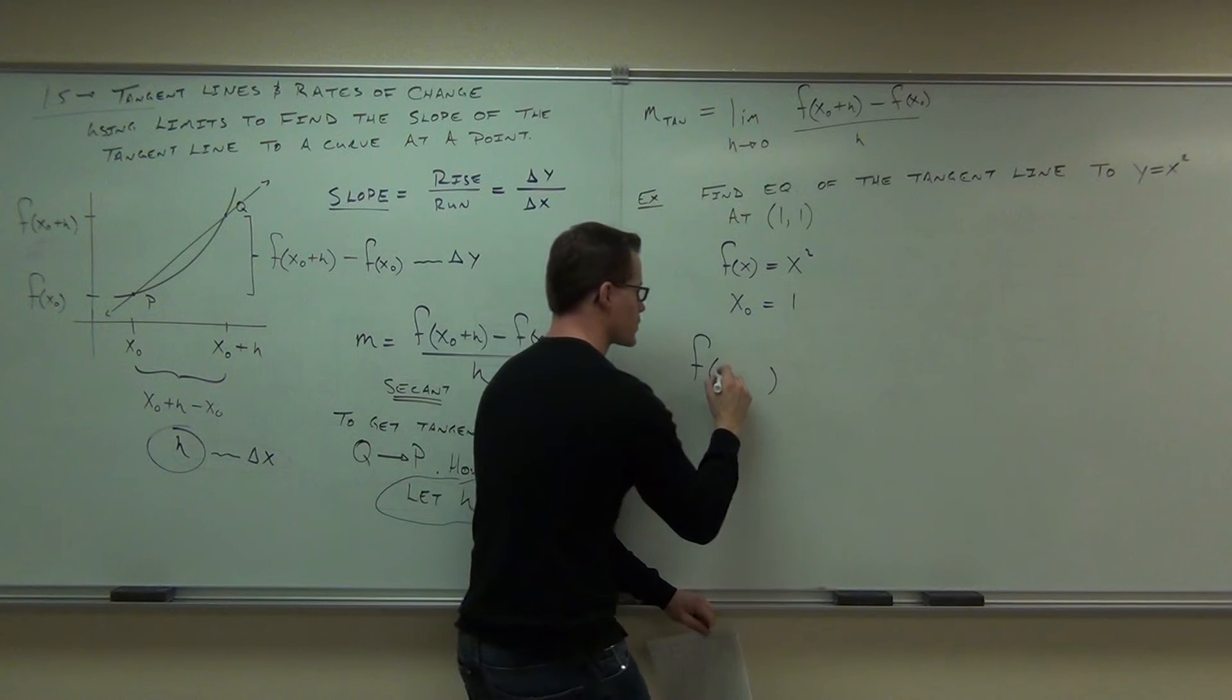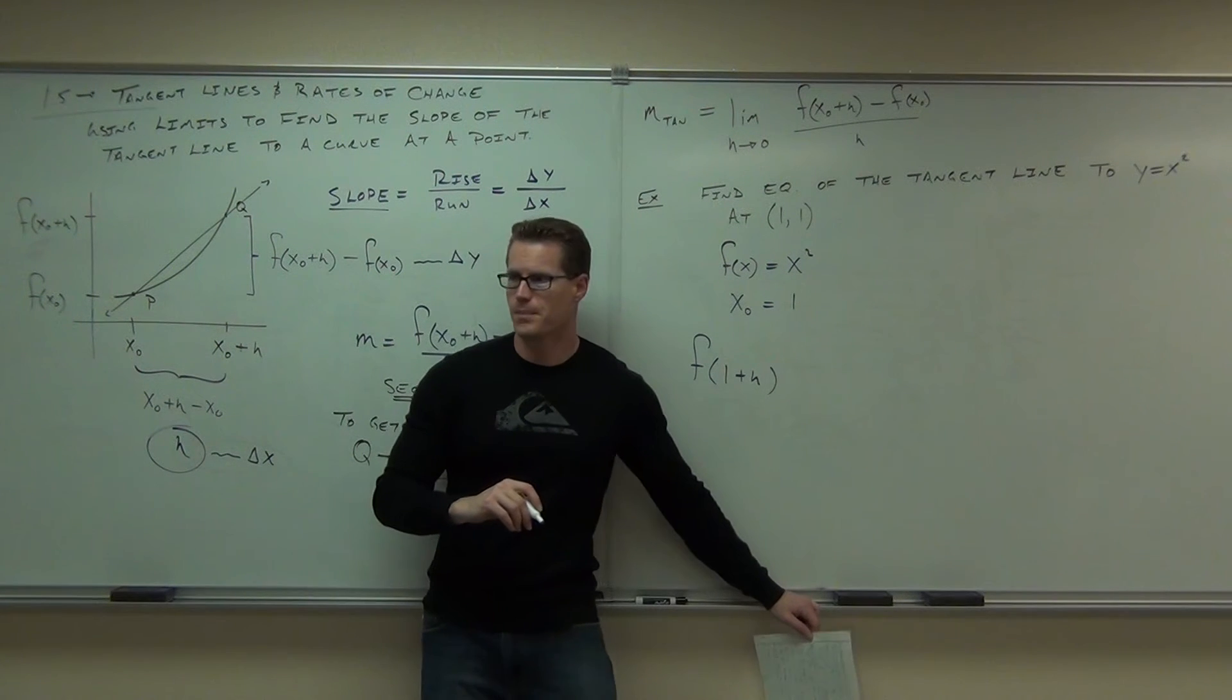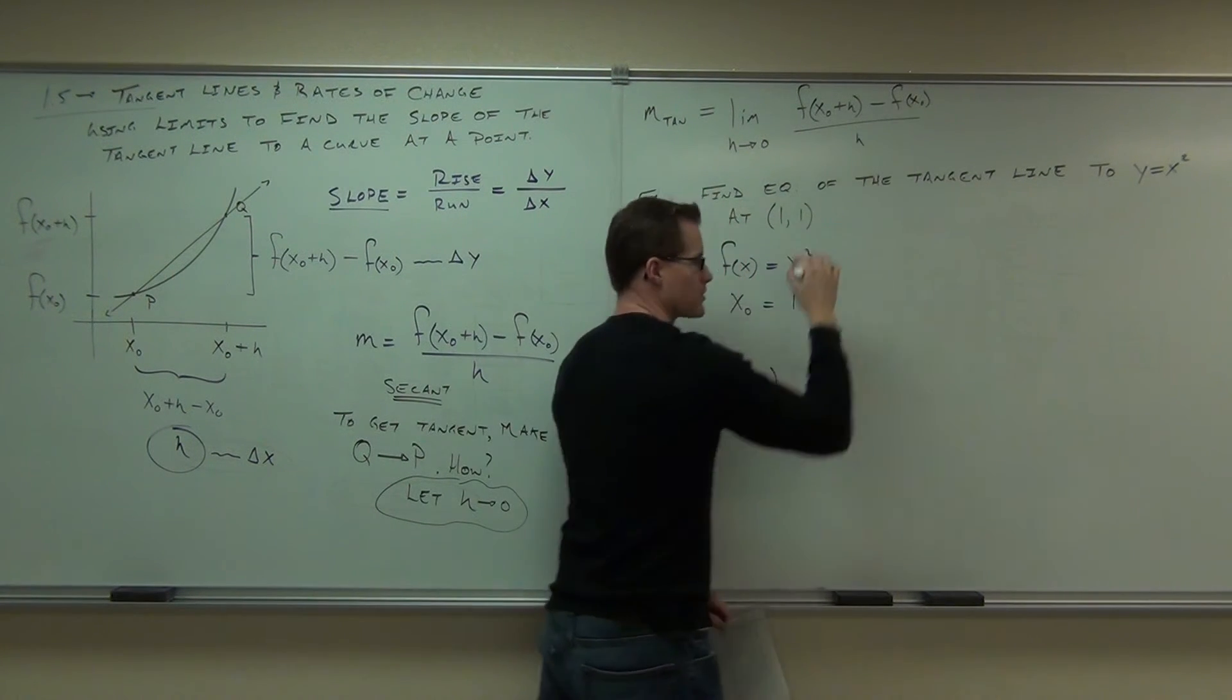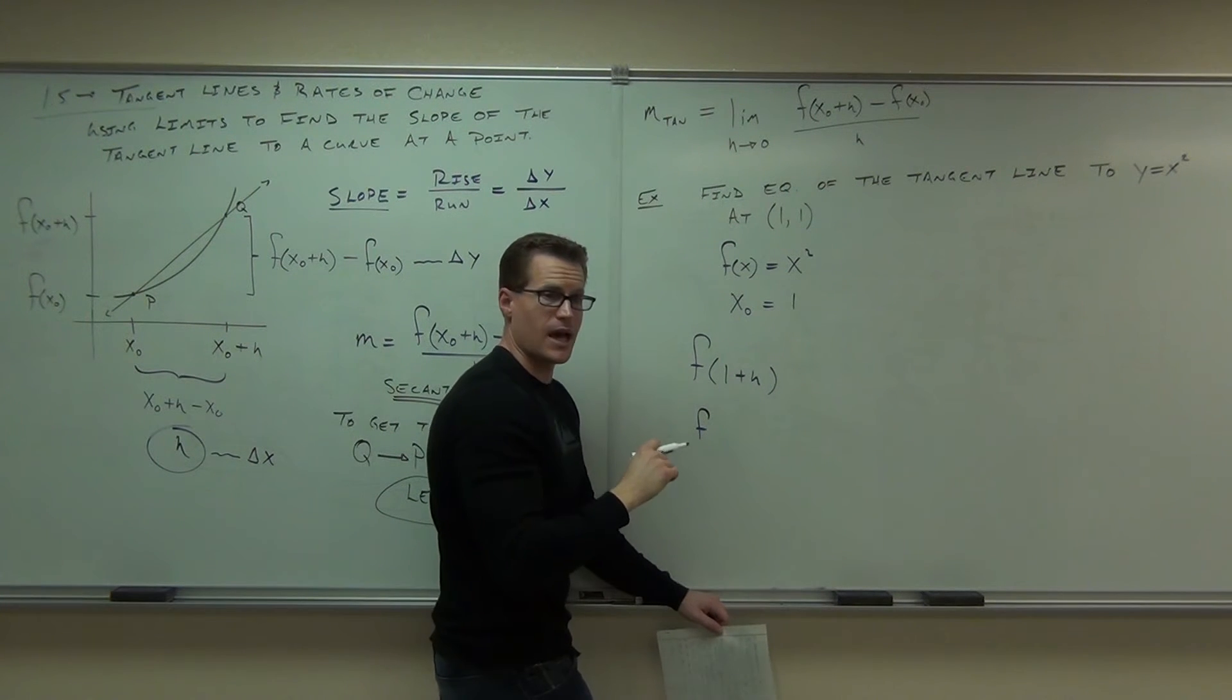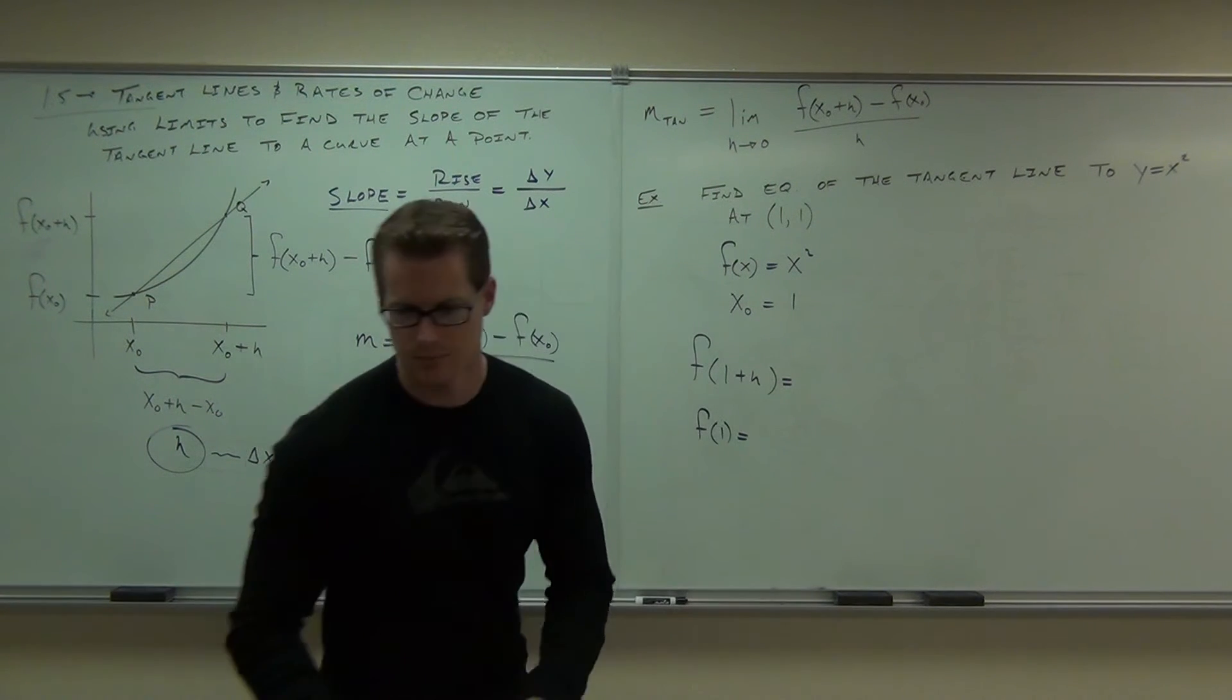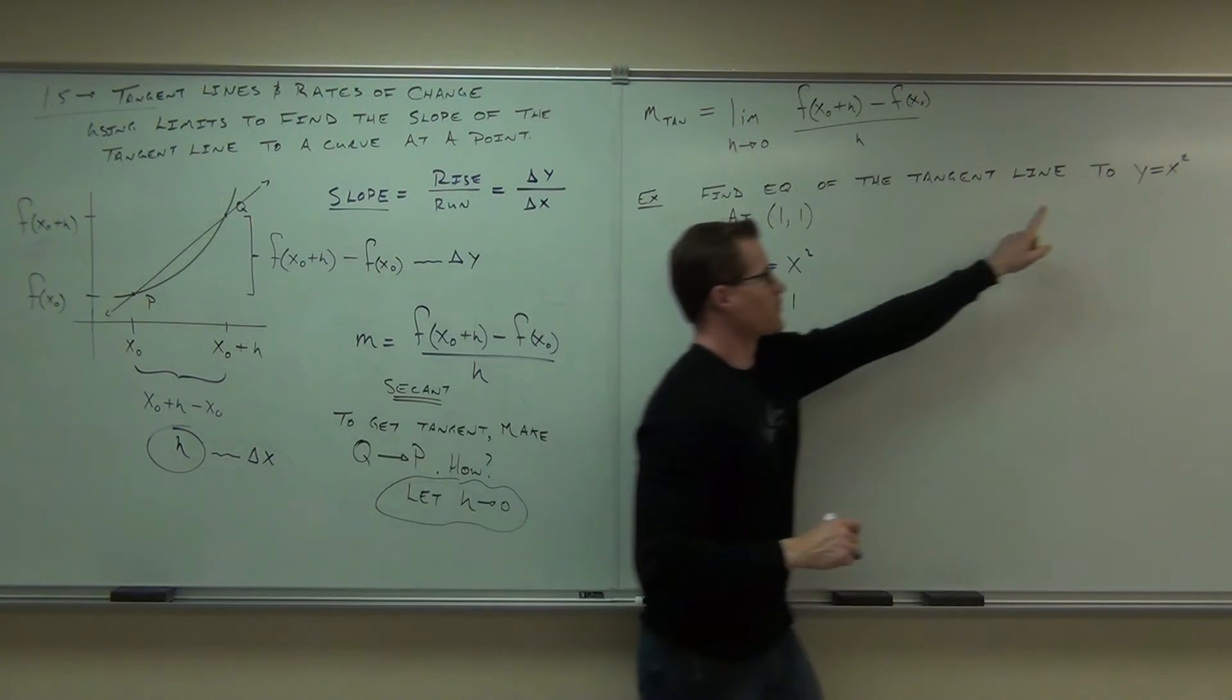Also, we want f of x sub 0. f of x sub 0 is really f of what? 1. Very good. So, short little recap. We identify our function. We identify the point. Those two things are there.